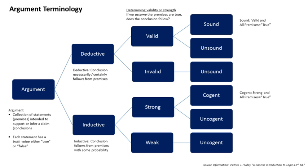An example of a valid but not sound argument: Everyone who eats carrots is a quarterback. John eats carrots. Therefore, John is a quarterback. The first premise is false — there are people who eat carrots who are not quarterbacks — but the conclusion would necessarily be true if the premises were true. It is impossible for the premises to be true and the conclusion false, so the argument is valid but not sound. False generalizations, such as 'everyone who eats carrots is a quarterback,' are often used to make unsound arguments.